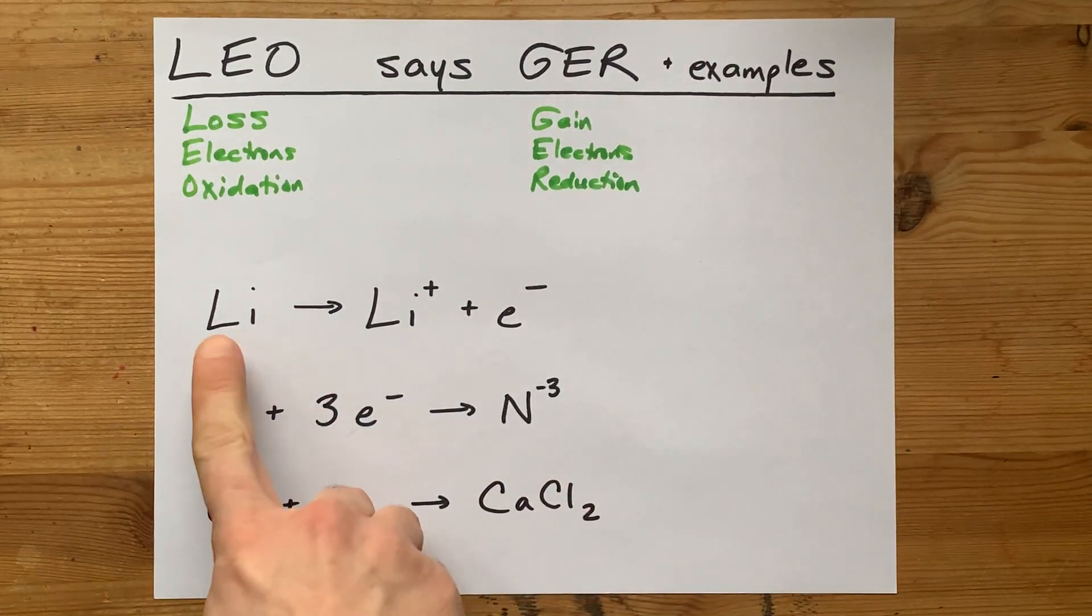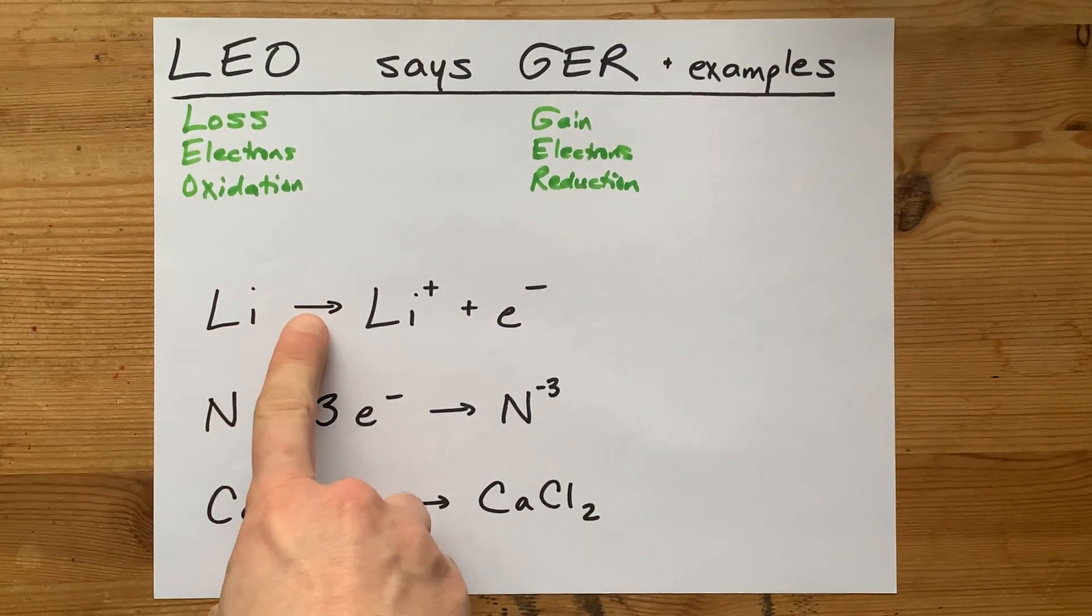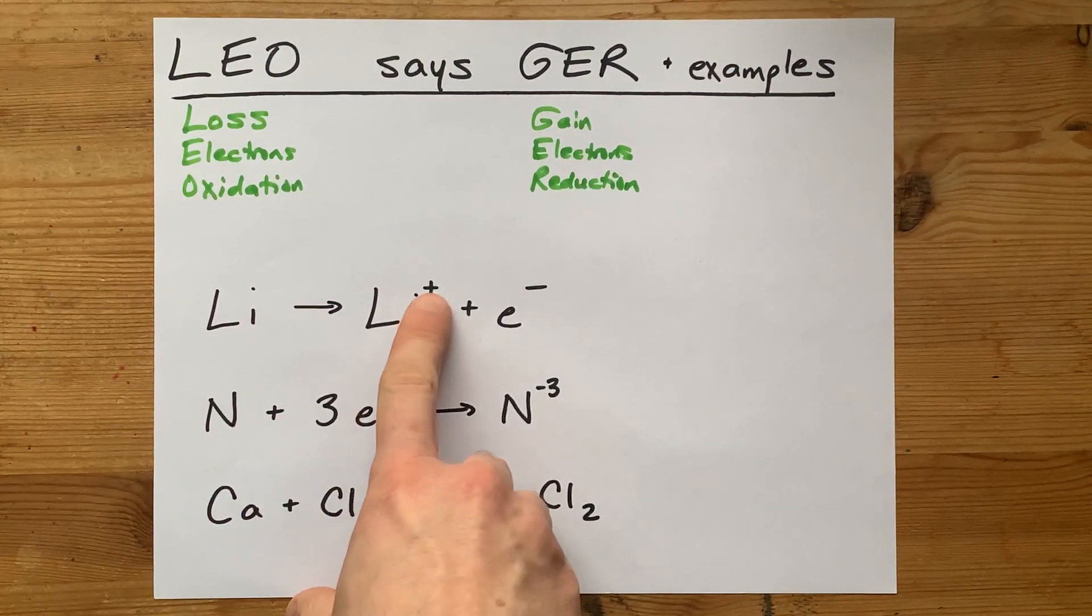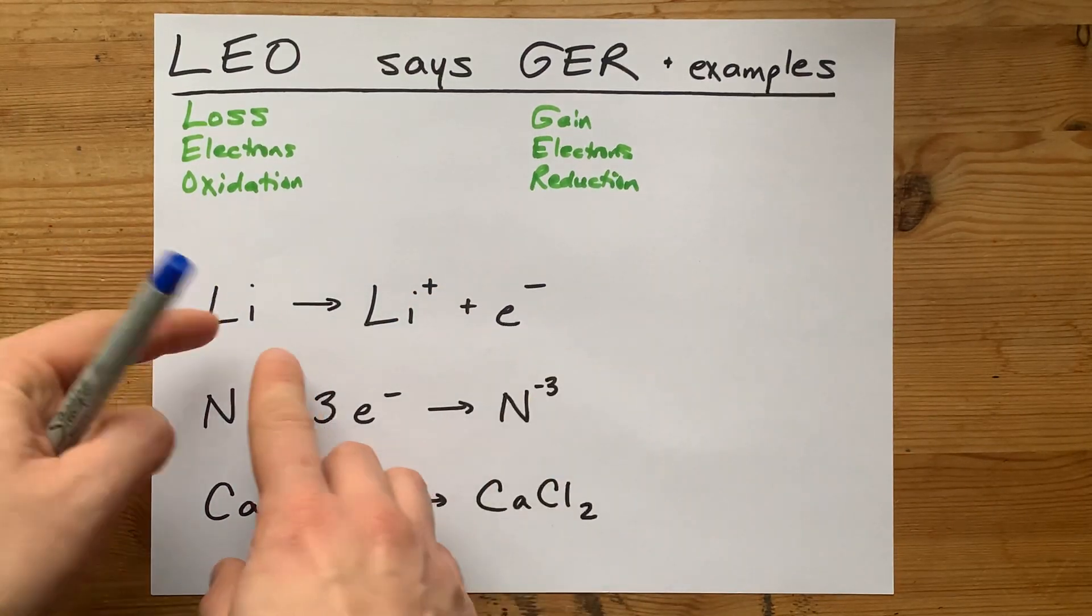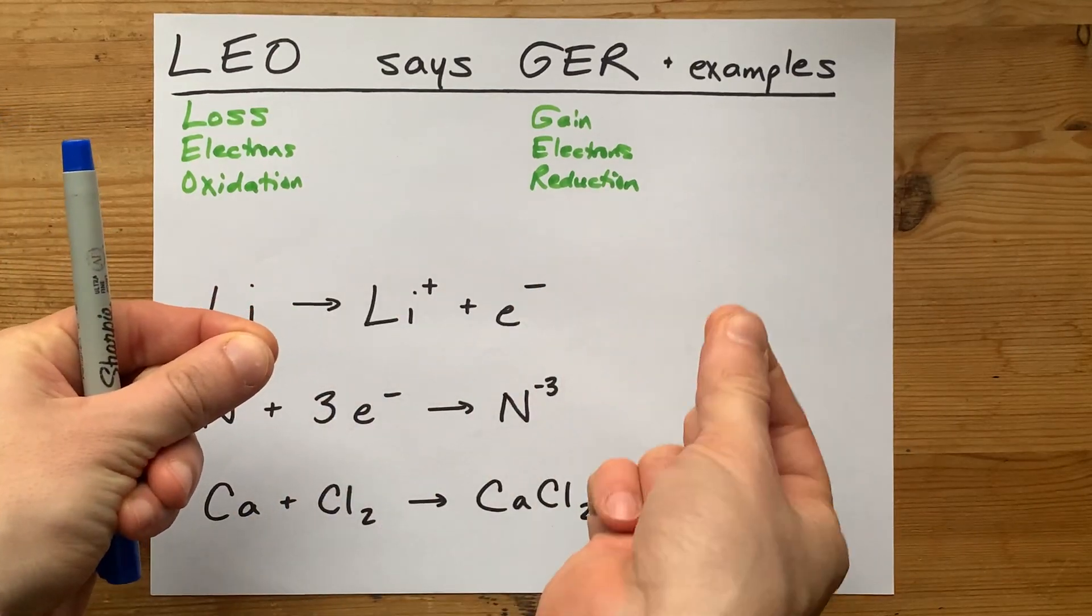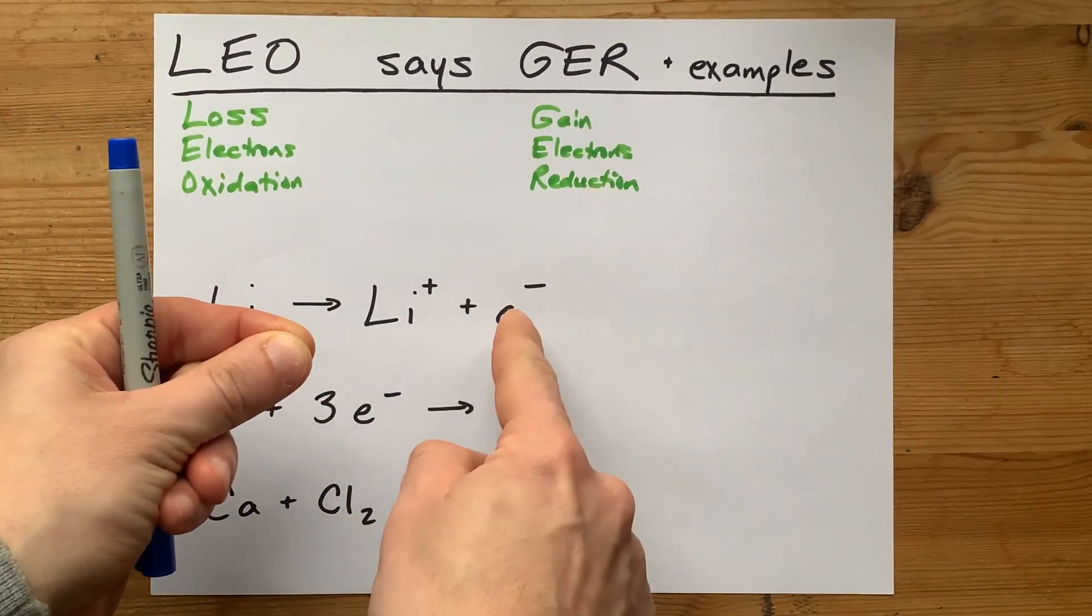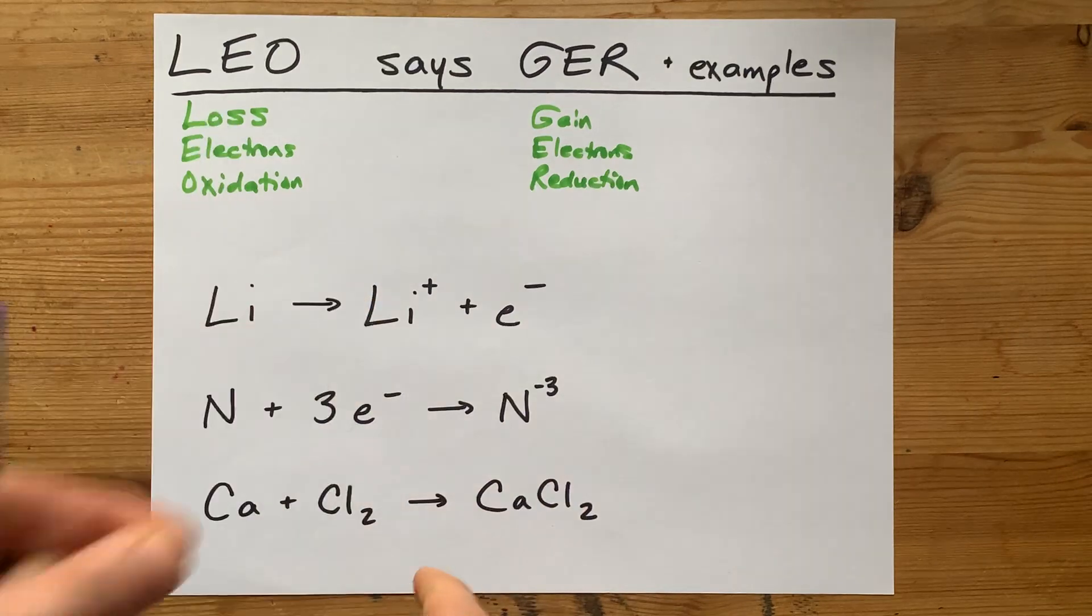Let's do a few examples. Lithium is breaking apart to give lithium positive ions and electrons. The electron that was inside the lithium atom has been plucked out. It's now a separate product, and you're left with a cation.